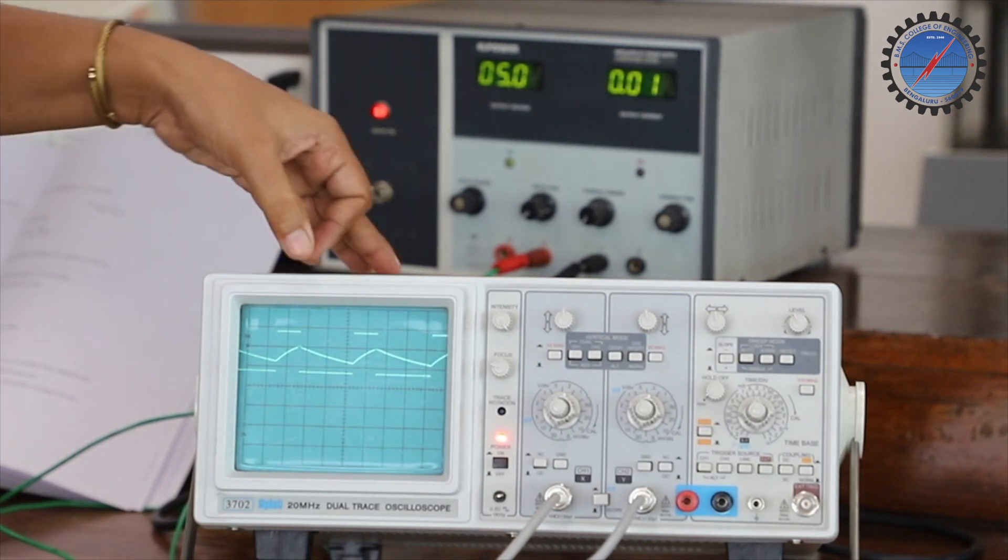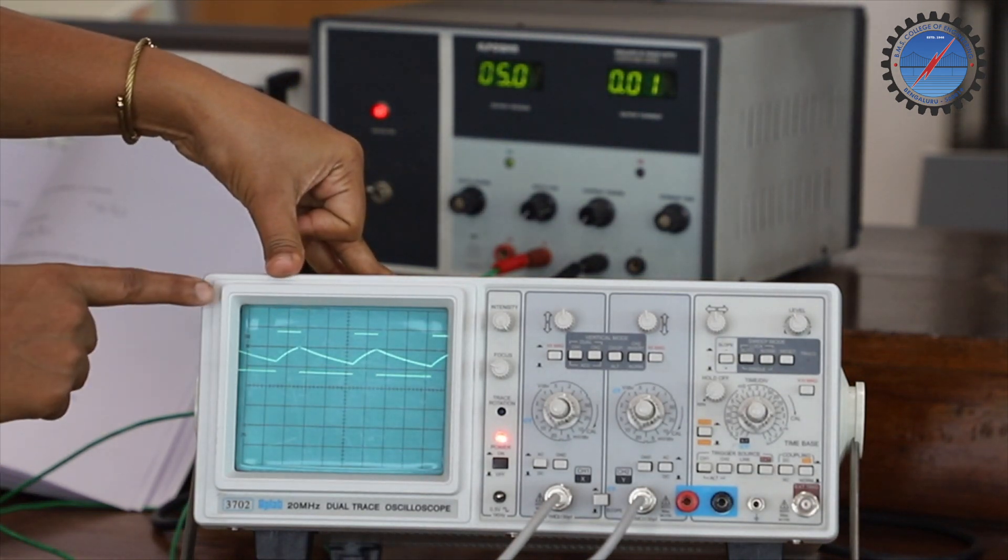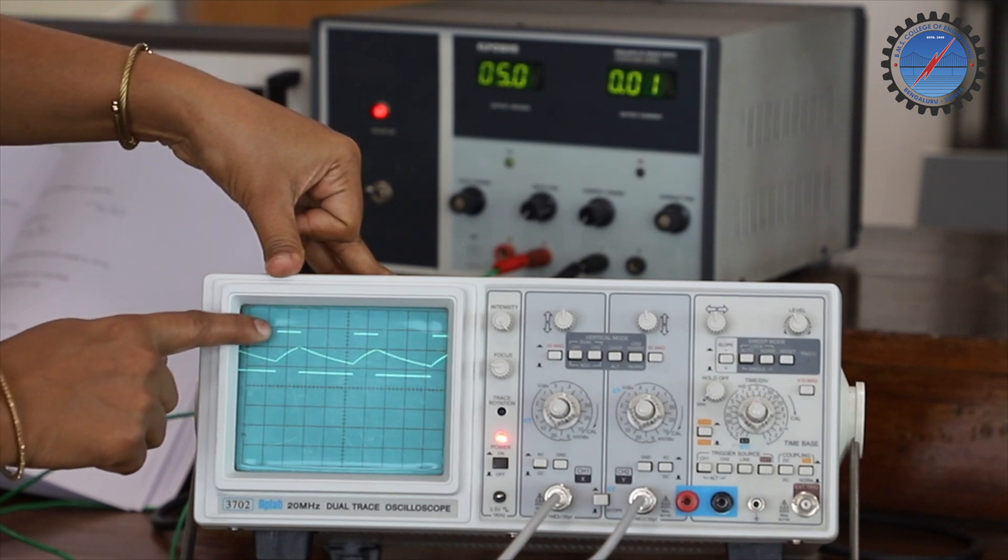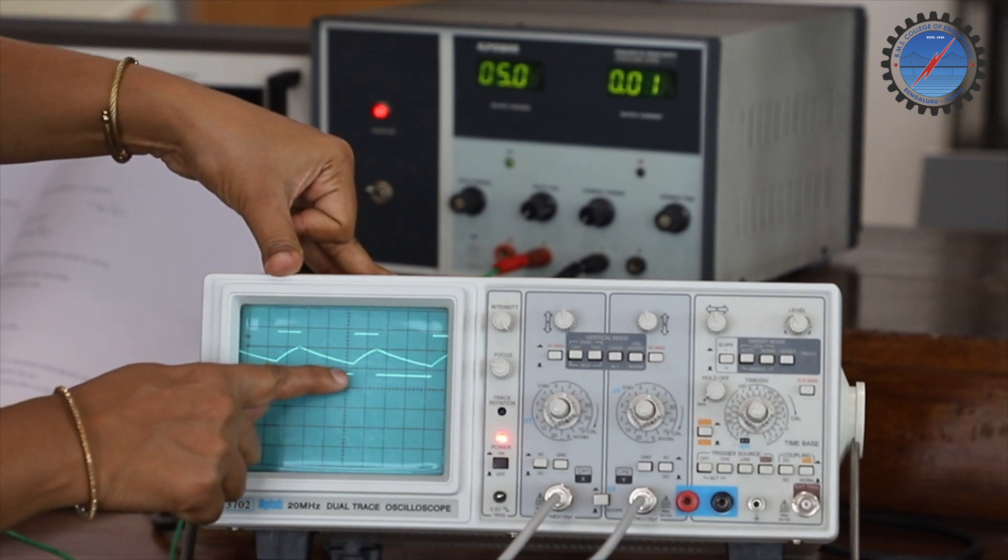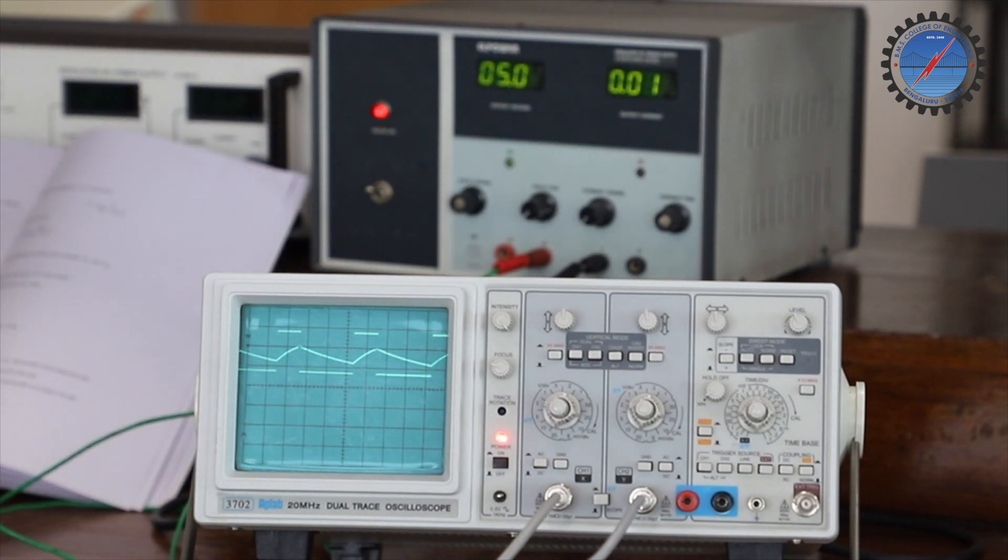From this we will be able to identify the duty cycle. Your T_on duration should be measured and T_off duration should be measured. Duty cycle can be measured using the expression T_on by T_on plus T_off.